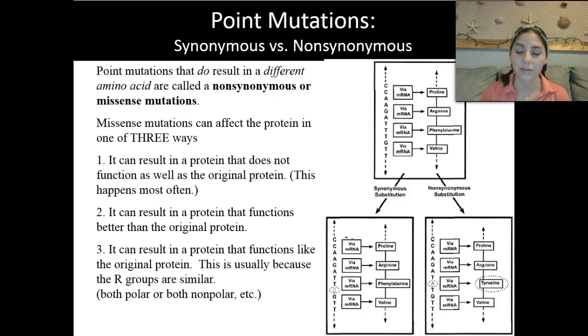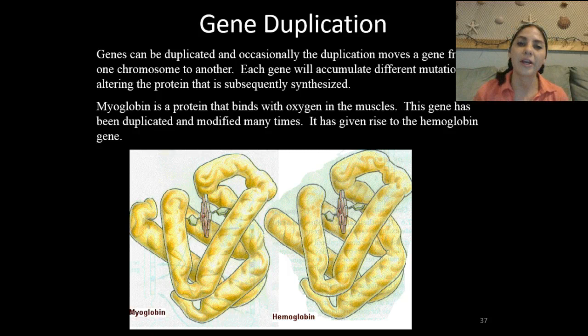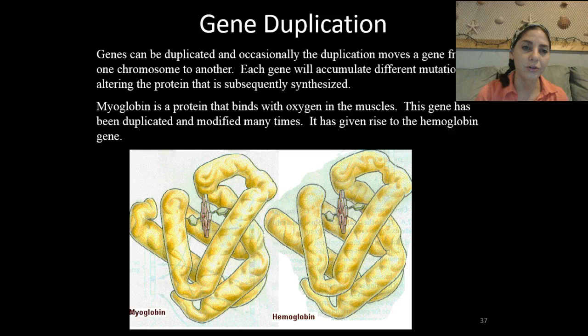Gene duplication can occur, and occasionally the duplicated gene moves from one chromosome to another. Each gene will accumulate different mutations, altering the protein that's subsequently synthesized. Myoglobin is a protein that bonds with oxygen in our muscles. This gene has been duplicated and modified many times, and it's also given rise to the hemoglobin gene.